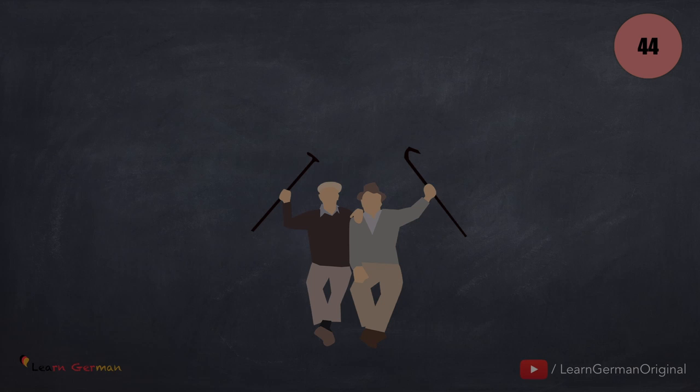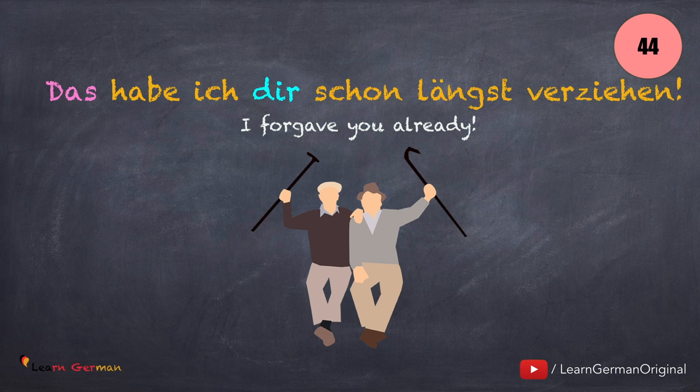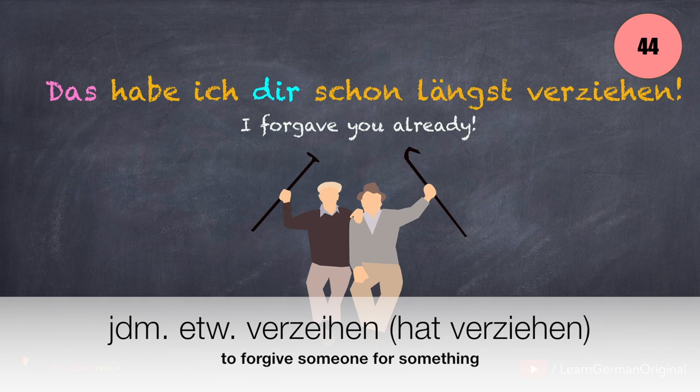Now let's look at the next one: Das habe ich dir schon längst verziehen. The verb here is verzeihen. Verziehen is the Partizip-Perfekt. Jemandem etwas verzeihen.